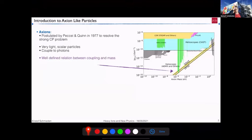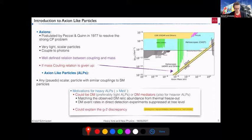So axion-like particles, they come from axions, obviously, which were postulated in 1977 by Peccei and Quinn to solve the strong CP problem, very light scalar particles. And they do couple to photons. And there is a very defined relation between the coupling and the mass of these particles. This is shown in this figure where you see the axion mass on the x-axis and the coupling to photons on the y-axis. And in this band, this is just limited by two different models, lies the QCD axion, which solves the strong CP problem. Now, if you get rid of this coupling relation to the mass, then we come to axion-like particles.